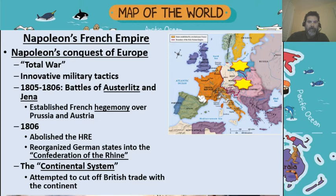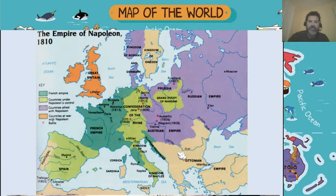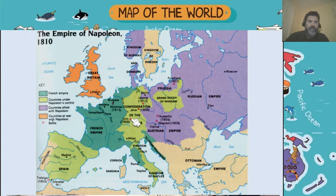Napoleon begins to organize Europe into the continental system. By 1810, he pushes even farther. Most of Spain is under French control. The Confederation of the Rhine is under French control. Most of Italy is under direct French control.